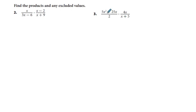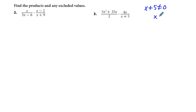In problem 3, we know that x plus 5 cannot be equal to 0, because we can't divide by 0. Therefore our excluded value is x cannot be equal to negative 5.